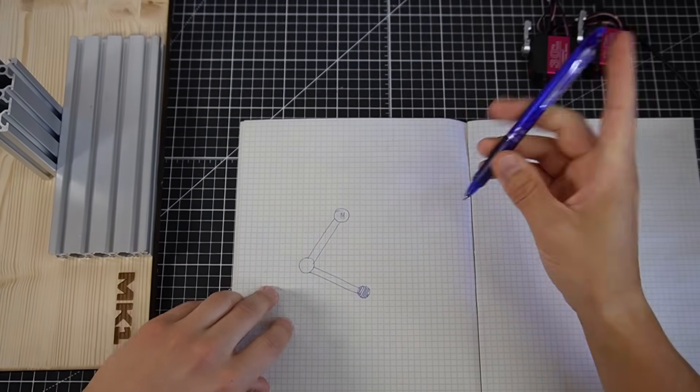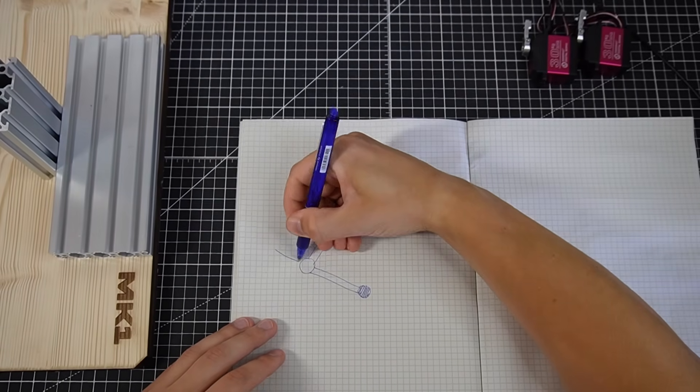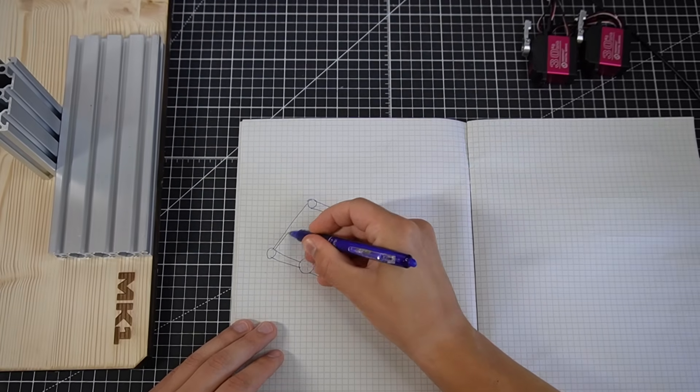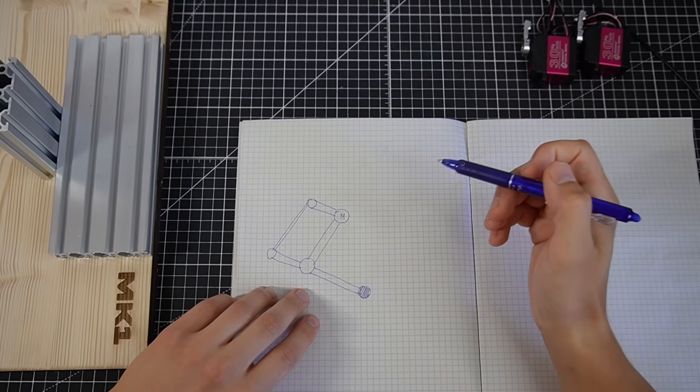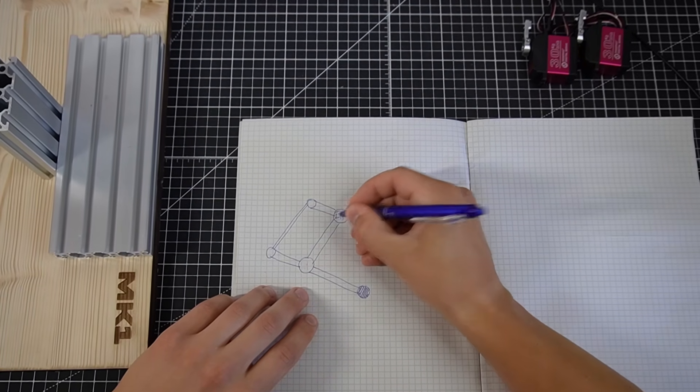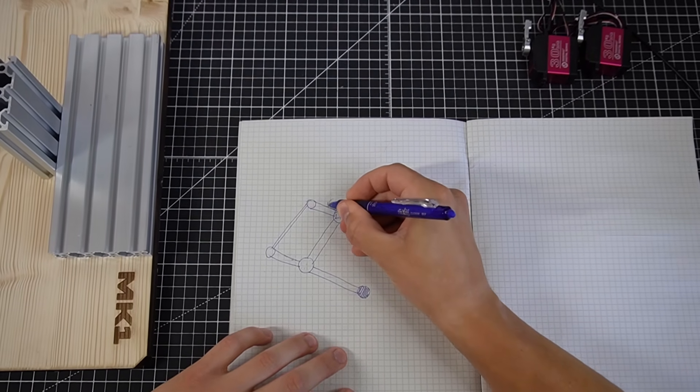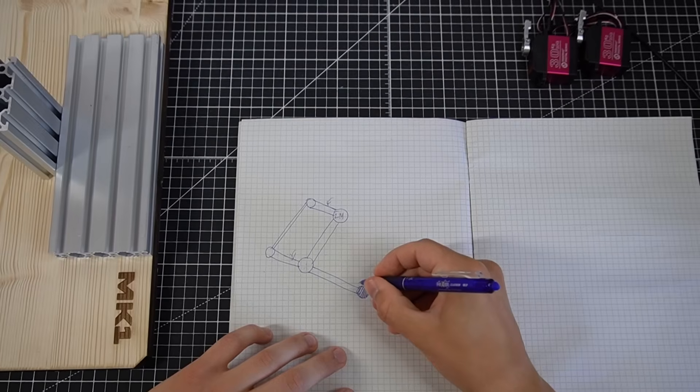So instead of this motor, we can extend this link at the joint and make a parallelogram. Now we can move the motor from here to here. This way we have two motors here. One controls this angle, which gets copied to here and moves the foot.